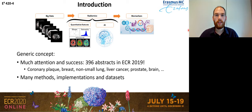For example, last year at ECR alone, we saw almost 400 abstracts mentioning radiomics. And you see that these are on a wide variety of applications — for example, in coronary plaque, liver cancer, prostate cancer, and brain cancer. It has spawned a wide variety of methods and implementations — mostly software implementations and also many different data sets.